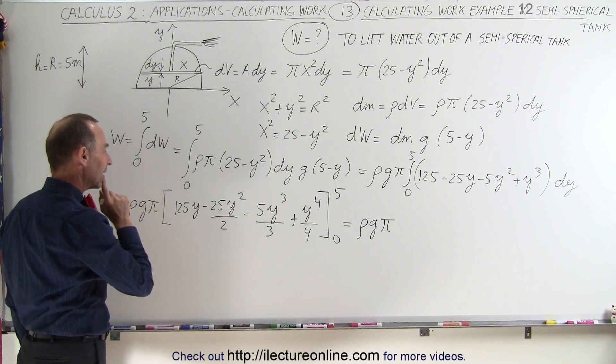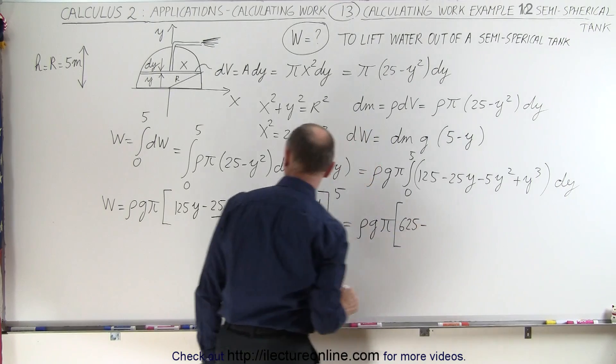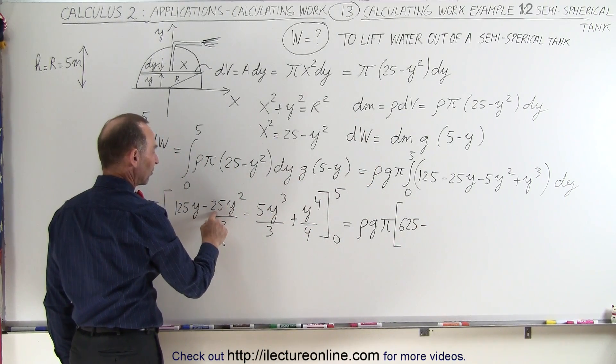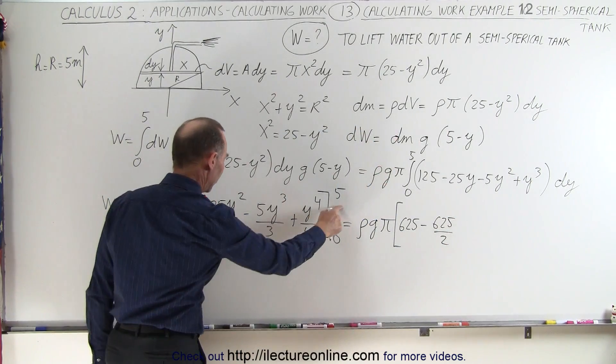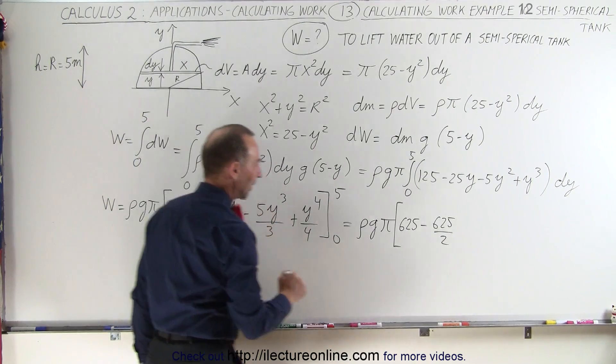Here we get 125 times 5, which is 625, minus 5² is 25 times 25, which is 625 divided by 2. Plug in this, we get 5³, 125 times 5 is 625 divided by 3.